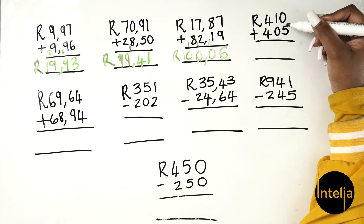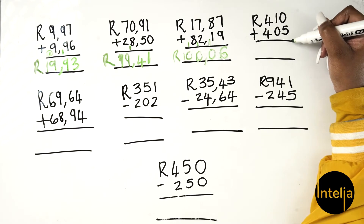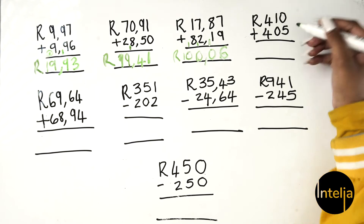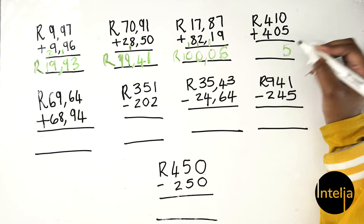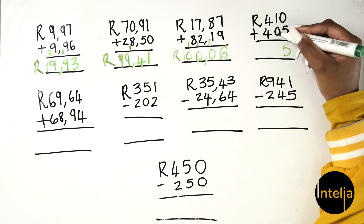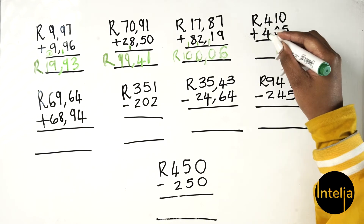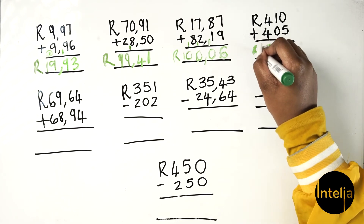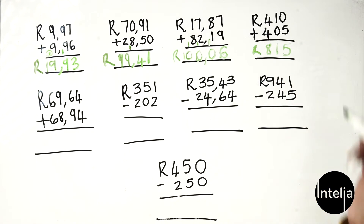Moving on to the next: 410 rands plus 405 rands. 0 plus 5 gives you 5, 1 plus 0 gives you 1, 4 plus 4 gives you 8. So your answer would be 815 rands.